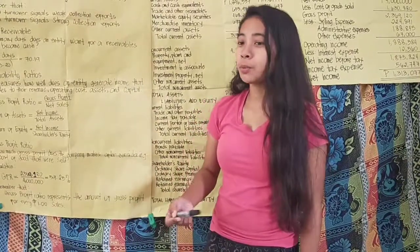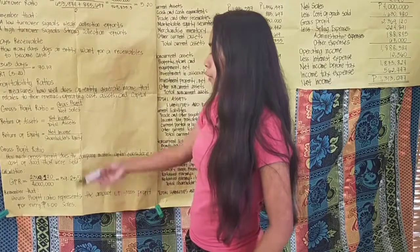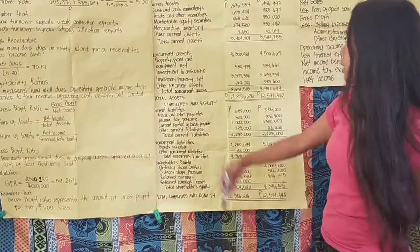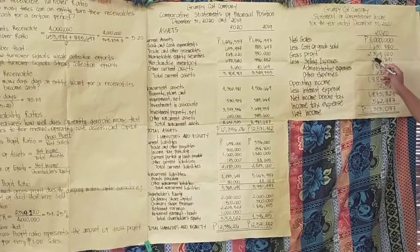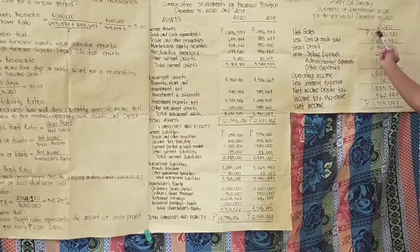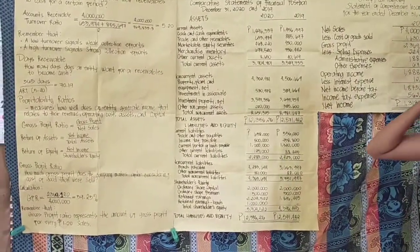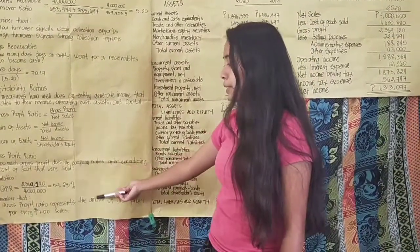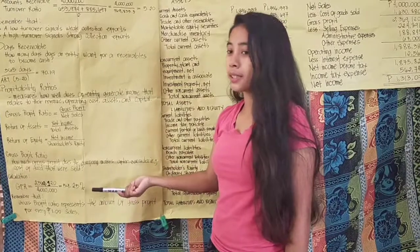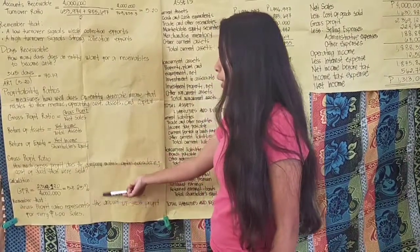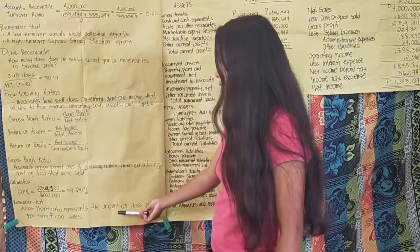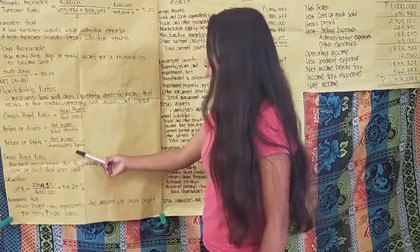Gross profit ratio answers: how much gross profit does the company make after considering cost of goods sold — essentially, what percentage of profit comes from selling. Using the formula, gross profit of 2,369,120 divided by net sales of 4 million gives 59.23%. This means 59.23% of sales is the entity's gross profit.